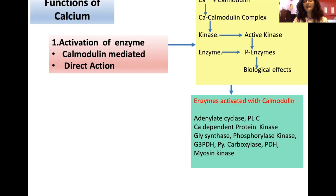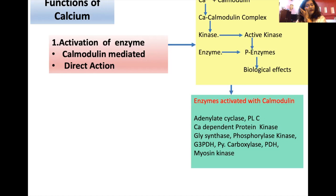Enzymes activated by the calcium-calmodulin complex include adenylate cyclase, phospholipase C, calcium-dependent protein kinase, and glycogen metabolism enzymes such as glycogen synthase and phosphorylase kinase. Important enzymes of carbohydrate metabolism — glycerol-3-phosphate dehydrogenase, pyruvate carboxylase, and pyruvate dehydrogenase — are also activated this way, along with myosin kinase.